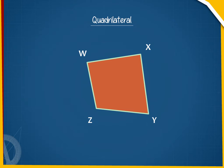it makes angles like angle WXY, angle XYZ, angle YZW, and angle ZWX. It has two diagonals, WY and XZ.